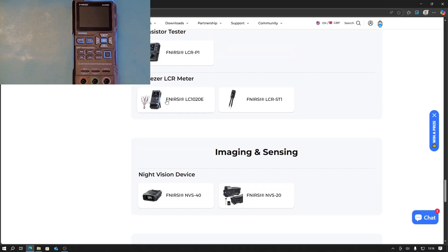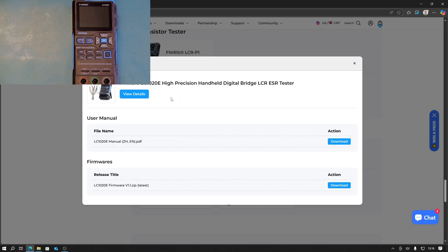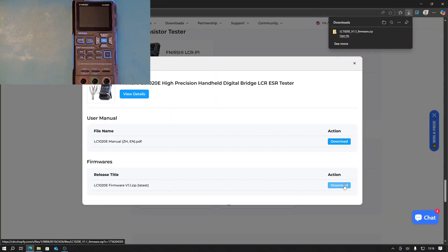That kind of thing. Okay, so we've got the meter here. There's the manual available for download. Here's the firmware—version 1.1 is the latest. Let's just download that.